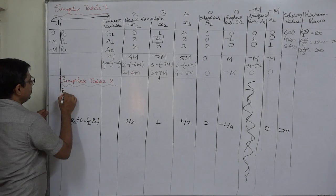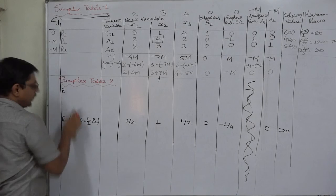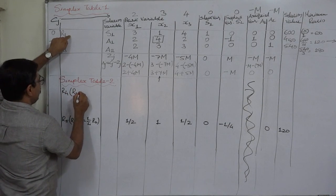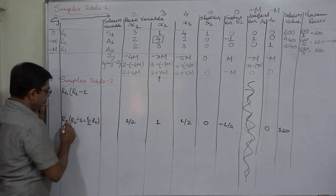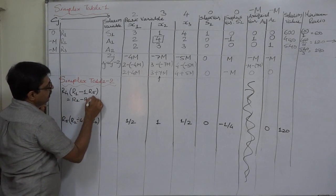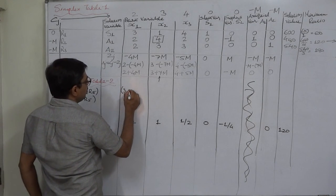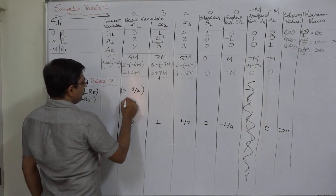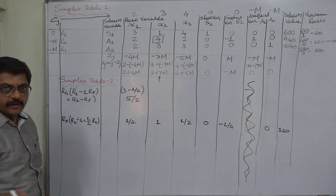Now it is the turn of r4, which will take the place of r1. r4 = old row r1 minus the sign element in the key column multiplied by replace row r5. That is r1 minus r5. The first element: 3 is r1 minus r5 which is 1/2, so it will be 5/2 because 3 minus half is 2.5 or 5/2.